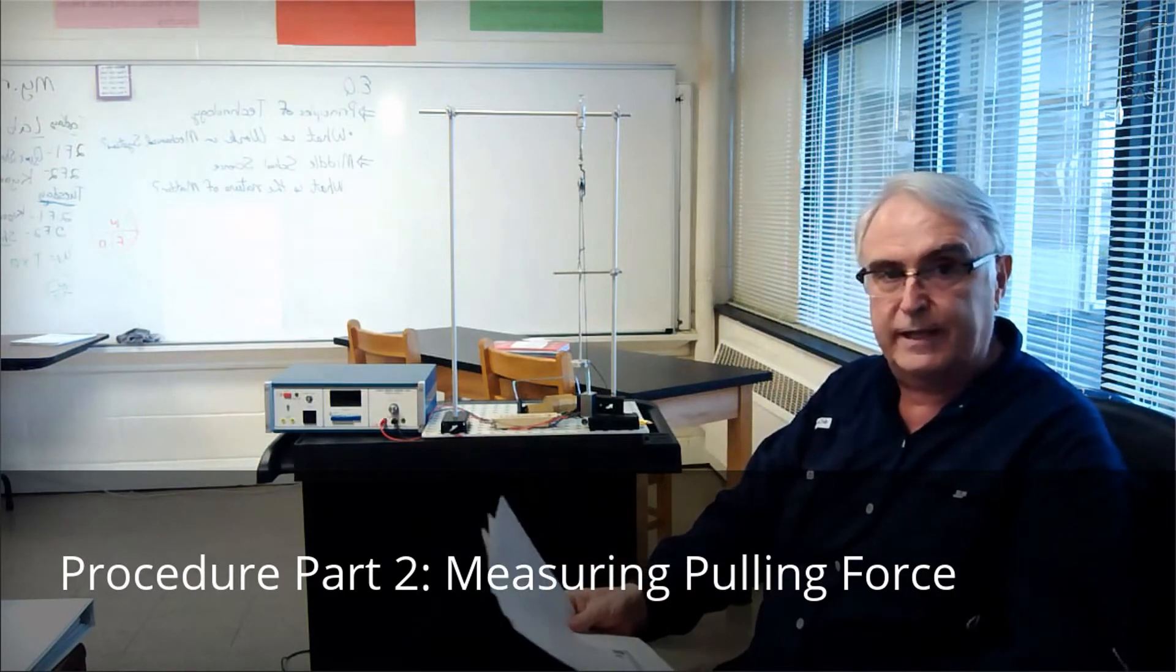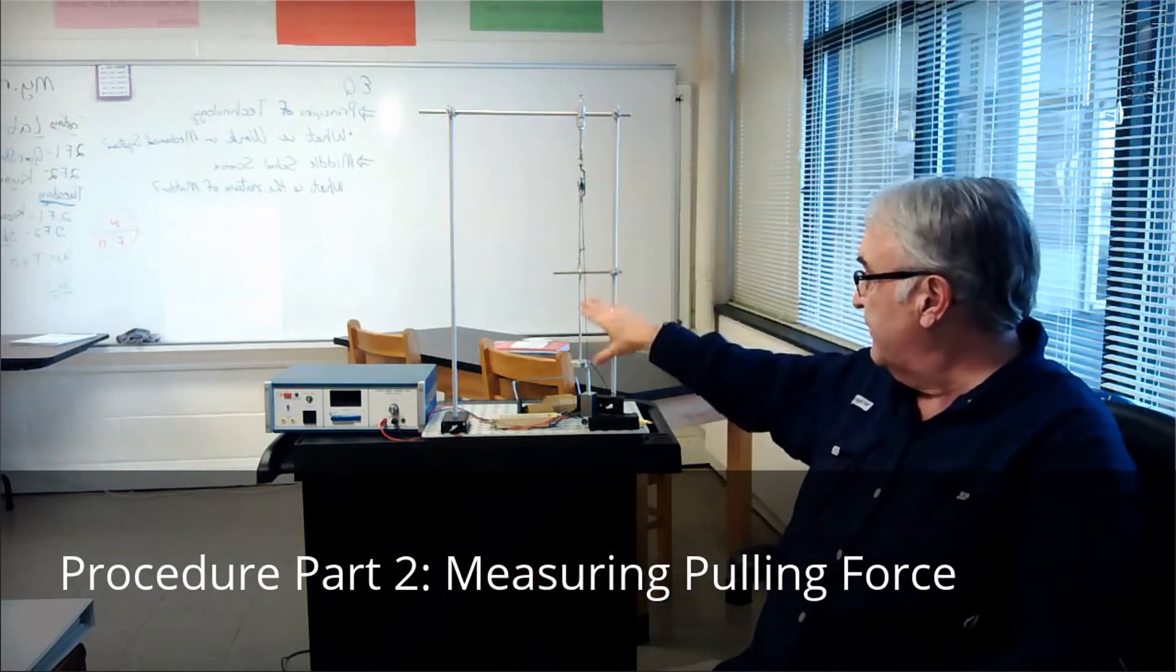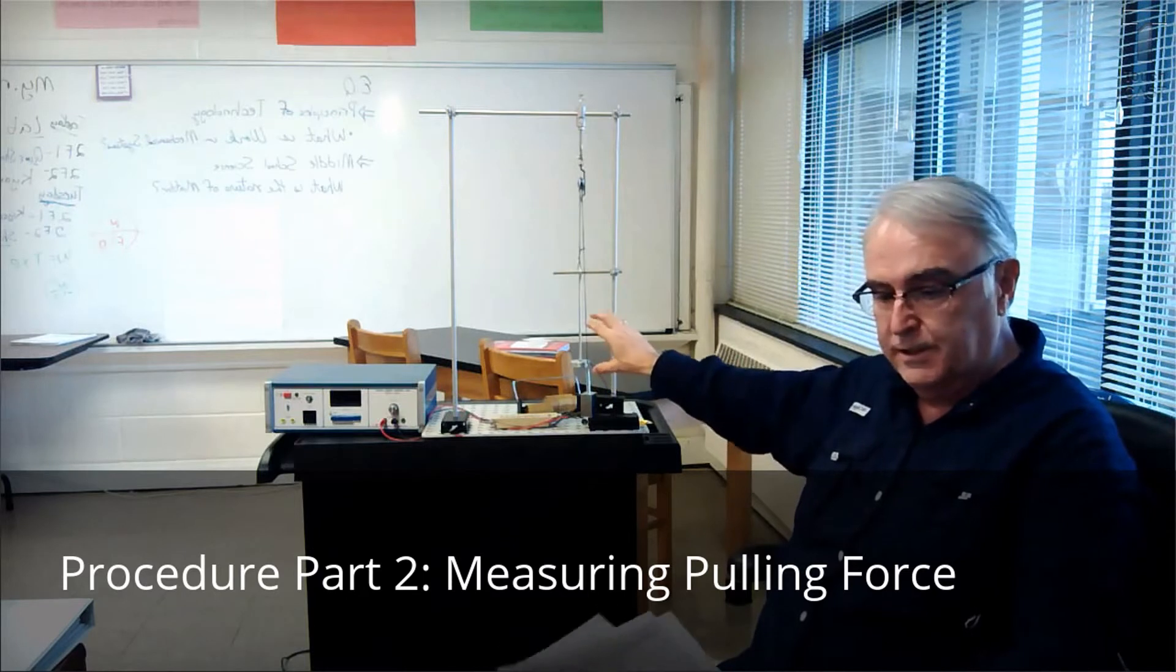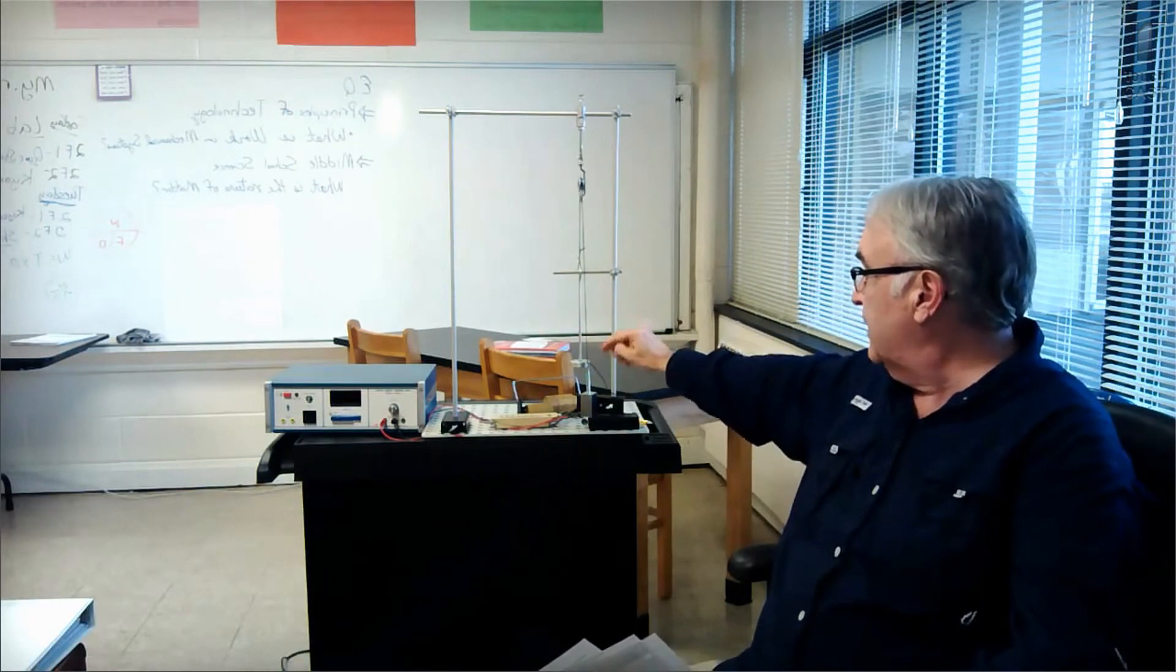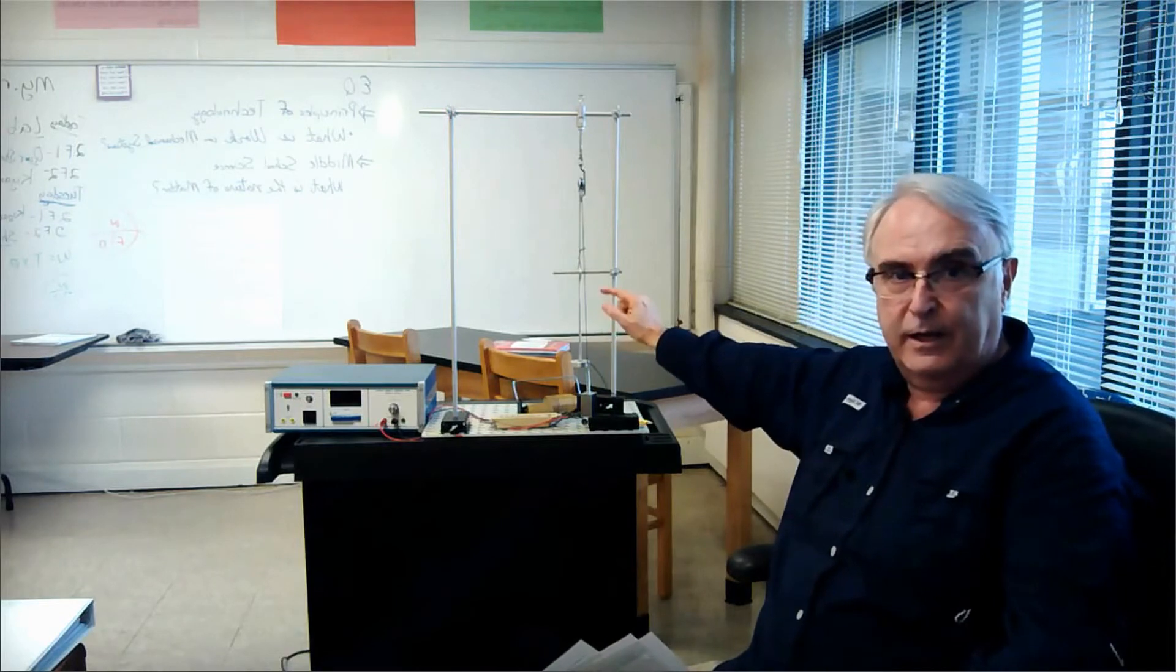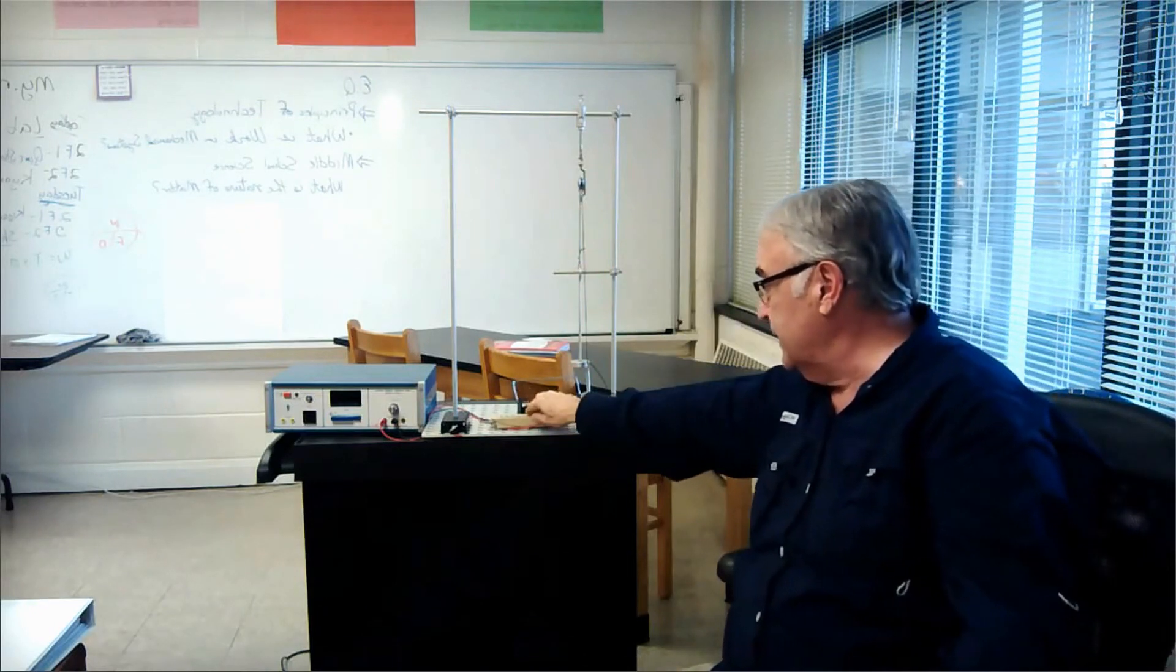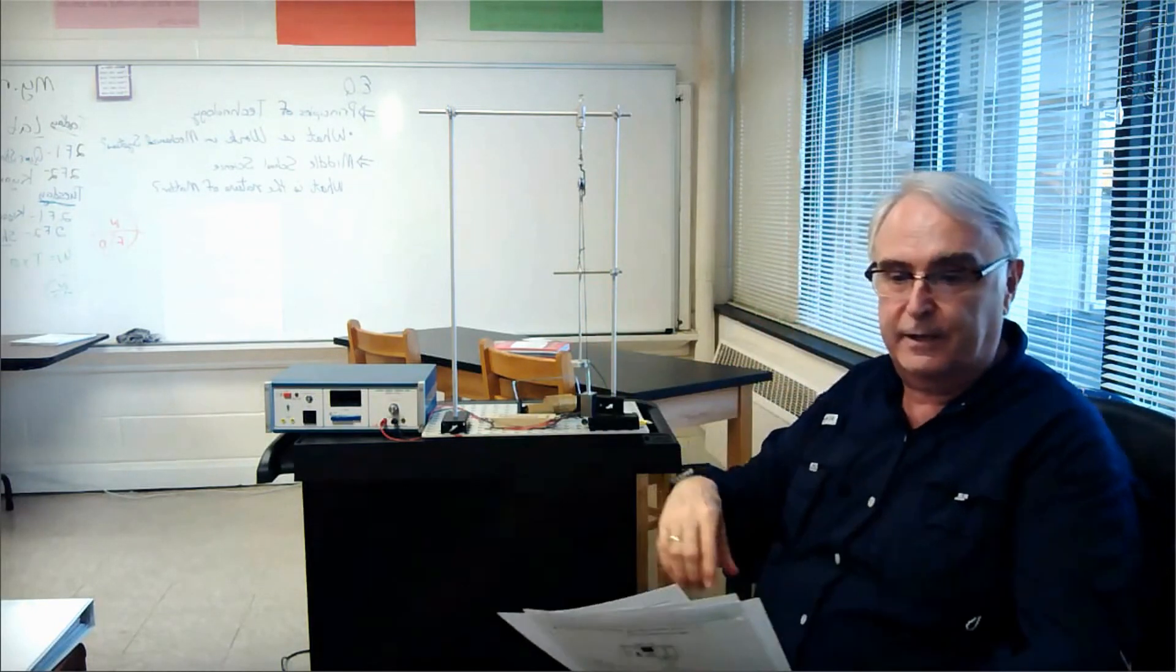So there's two main steps. One of them is finding out what the pulling force is with a four volt and a five volt setting and adding 10 gram increments. And then the last part is to disassemble this, put on the spring scale, and find the pulling force.